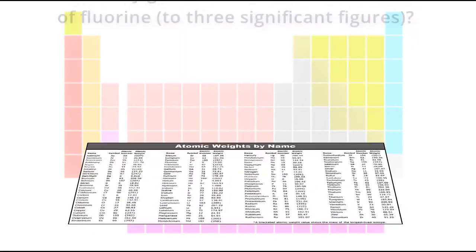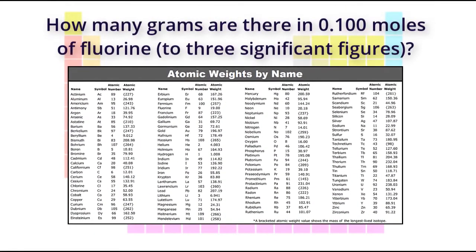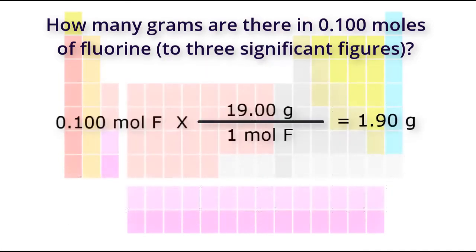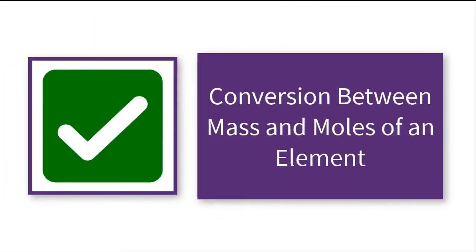Let's do one more: how many grams are there in 0.100 moles of fluorine, to three significant figures? Pause the video here and play it once you think you know the answer. There are 1.90 grams of fluorine in 0.100 moles of fluorine. You have completed this activity on conversion between mass and moles of an element.